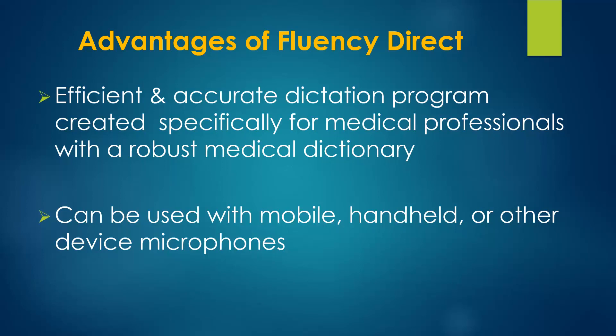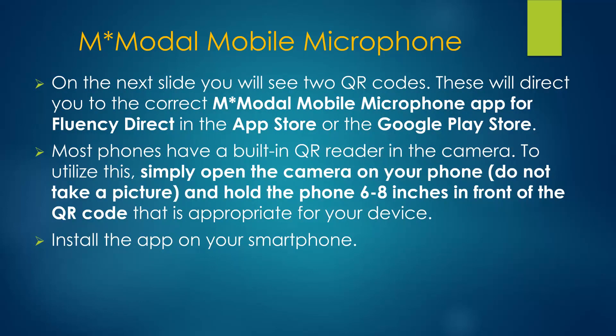The option of using your own device as a mobile microphone is just one of Fluency Direct's great advantages. The next slide shows two QR codes, one for Android phones and the other for iPhones. Simply open the camera on your phone and point it at the appropriate block. Do not take a picture. Your phone will automatically read the QR code.